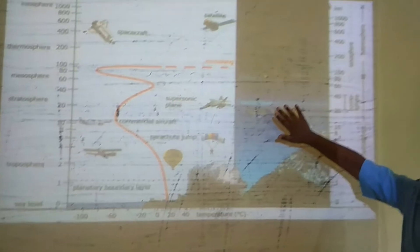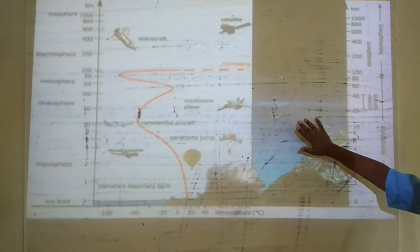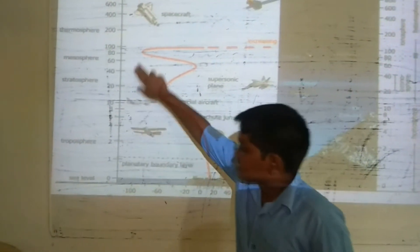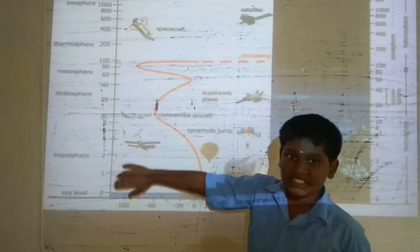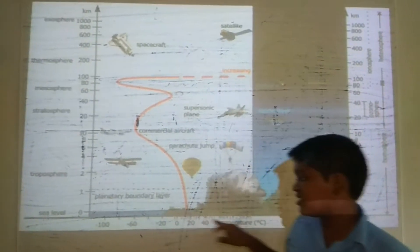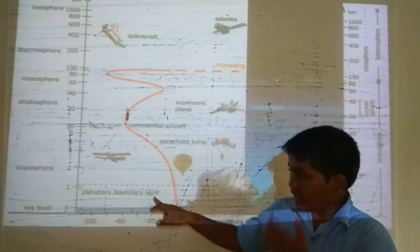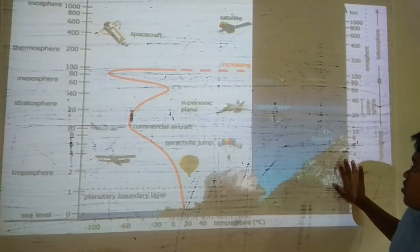If you observe this picture, we can see two axes: X-axis and Y-axis. The X-axis shows the height from sea level and the Y-axis shows the temperatures.